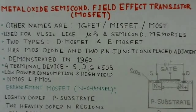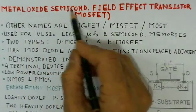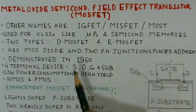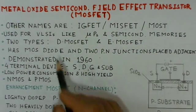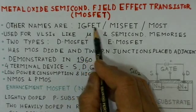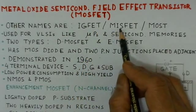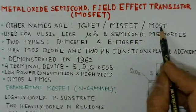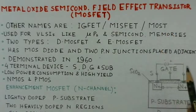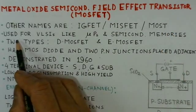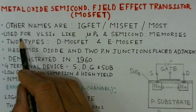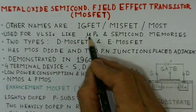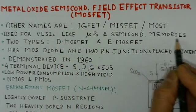MOSFETs — the full name is Metal Oxide Semiconductor Field Effect Transistor. Other names for MOSFETs are Insulated Gate Field Effect Transistor, Metal Insulator Semiconductor Field Effect Transistor, or Metal Oxide Semiconductor Transistor. These MOSFETs find applications in VLSIs like microprocessors and semiconductor memories.